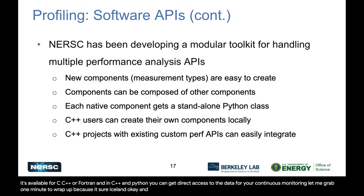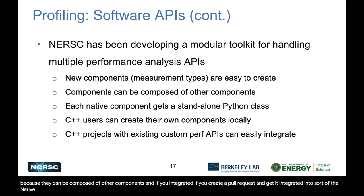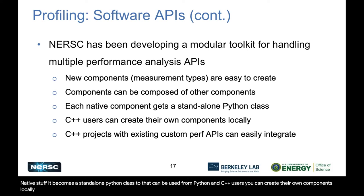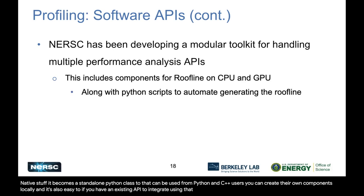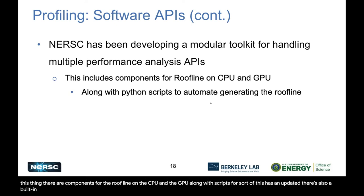The key features of Timemory are that it's really easy to create new components because they can be composed of other components. If you create a pull request and get it integrated into the native stuff, it becomes a standalone Python class that can be used from Python. C++ users can create their own components locally. It's also easy to integrate an existing API. There are components for the roofline on the CPU and the GPU along with scripts, and there's also a built-in empirical roofline toolkit along with Python scripts.